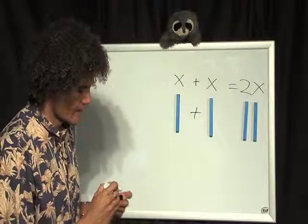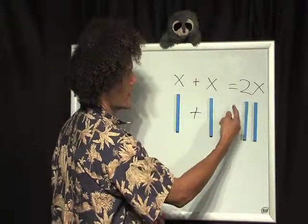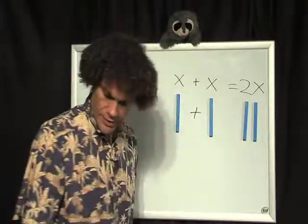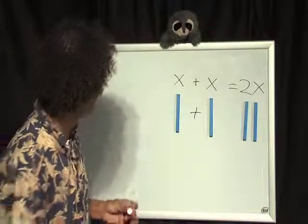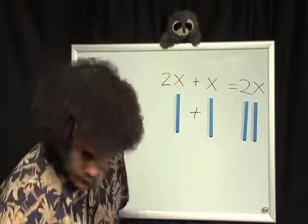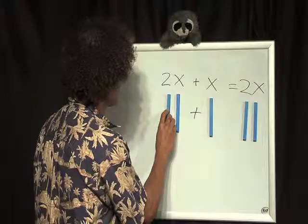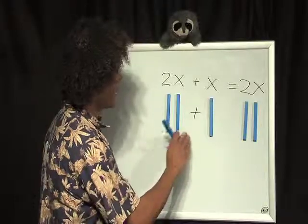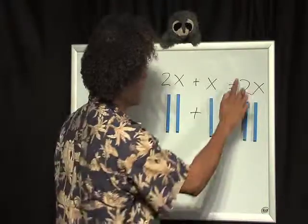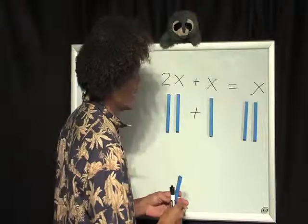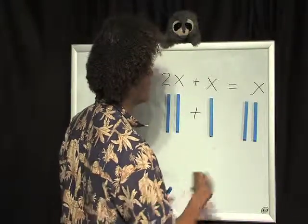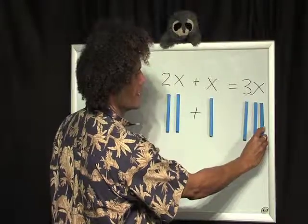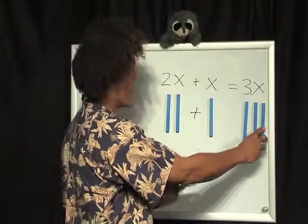Using the symbols, we just put a 2 in front of the X to tell us how many there are. Now, if I change my problem just slightly and add an X here, we can see that I have 2X and another X — I just add one more X. And of course, I have how many? 3X. We're just counting the same kind. Really easy: 2X and another X is 3X.